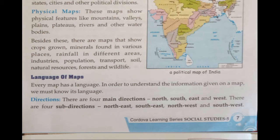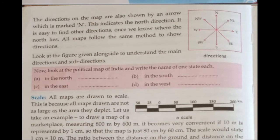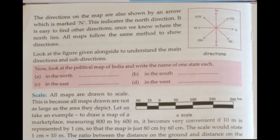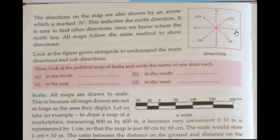Directions. There are four main directions: North, South, East, and West. There are four sub-directions: North-East, South-East, North-West, and South-West. The directions on a map are also shown by an arrow marked N, which indicates the North direction. It is easy to find other directions once we know where North lies. All maps follow the same method to show directions. Here you can see this arrow — there is North, under that we have South, to the left we have West, and to the right we have East. Like this, there is a compass given on the map.